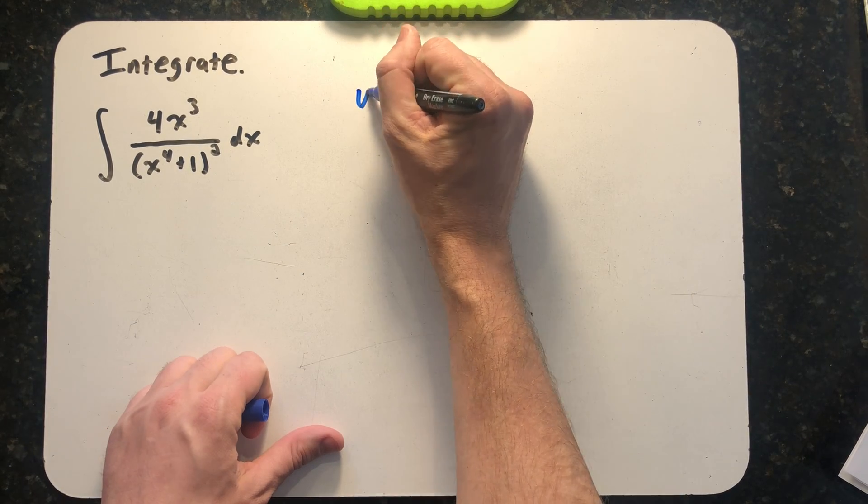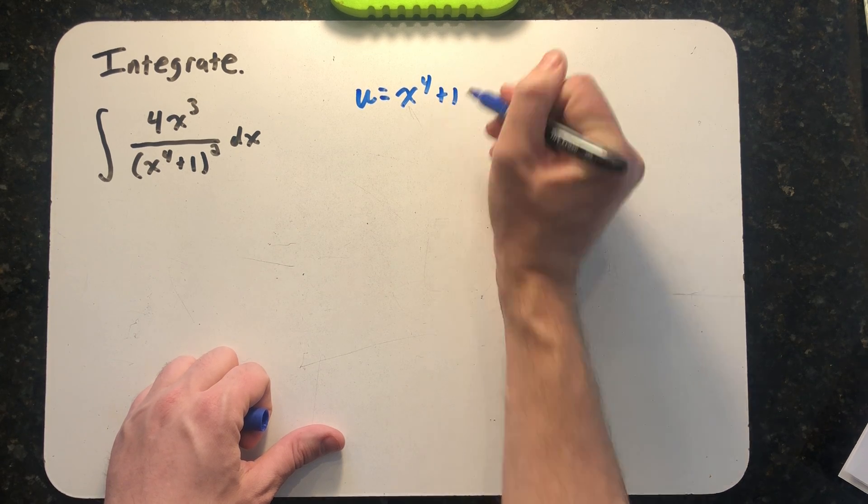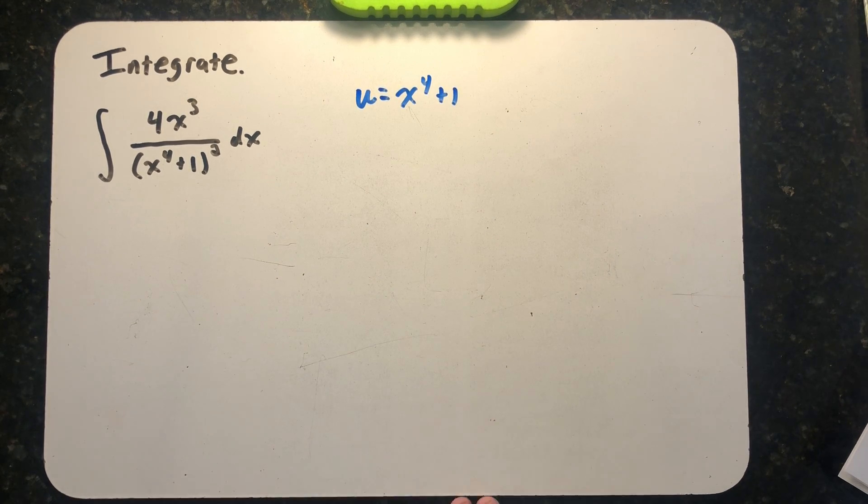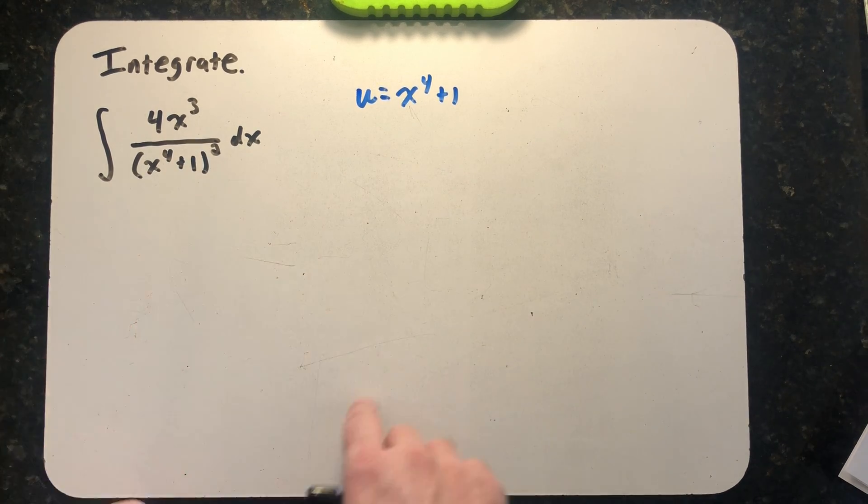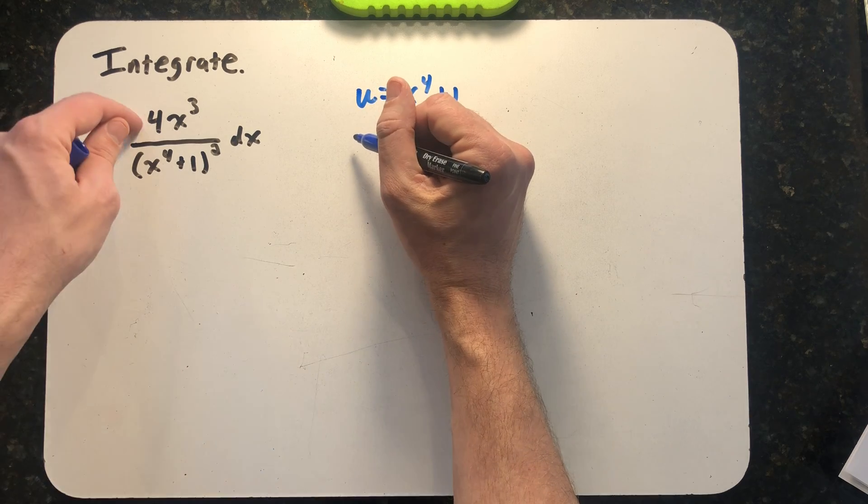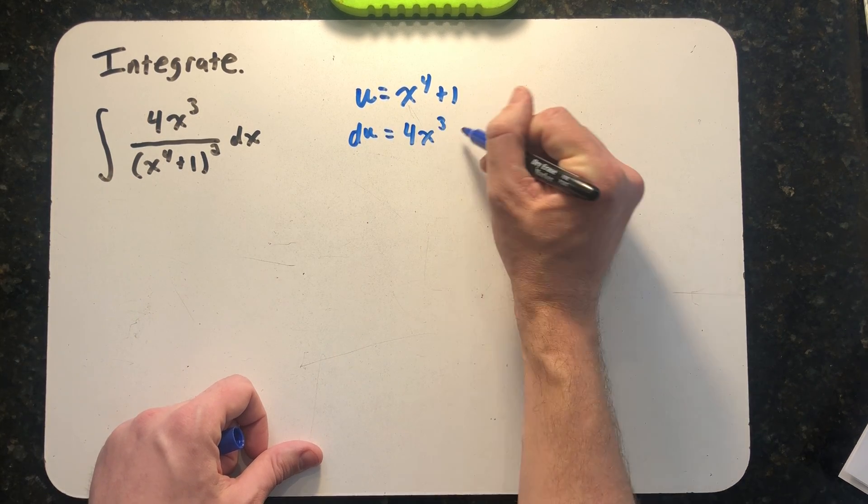I want to start with a substitution. This is a case where you can look at it and right away see an inside function that's really nice to use because number one, it's clearly an inside function, and number two, its derivative is sitting right there: du = 4x³dx.